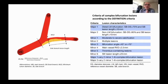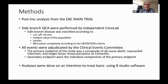This is a post-hoc analysis from the ABC Main trial. Side branch QCA was performed by an independent core lab. Side branch disease was classified by four approaches: a cutoff of 10 mm, the median value of the observed population, tertiles (low, medium, high), and DEFINITION criteria complexity. All events were adjudicated by the clinical events committee. Primary endpoint is death, MI, and TLR at 12 months, analyzed on intention-to-treat basis using R Studio software.